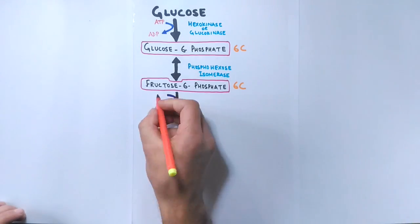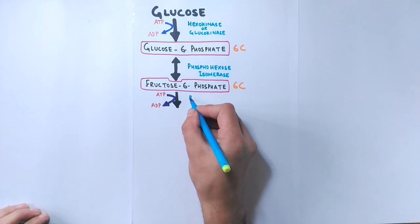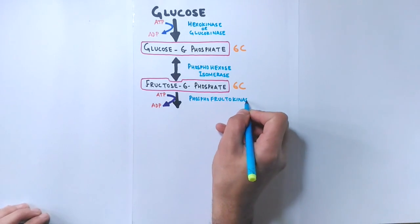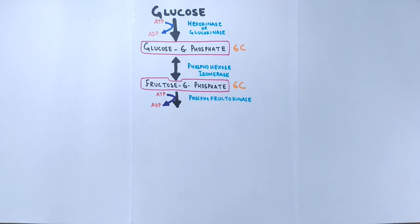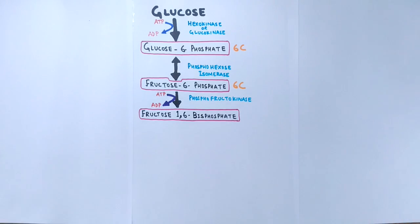Now again in this step, the energy from ATP is used and with the help of enzyme phosphofructokinase, the fructose 6-phosphate is converted into fructose 1,6-bisphosphate. Now this molecule has two phosphates at one and six positions, so called 1,6-bisphosphate. Cofactors like magnesium ions aid in this reaction.